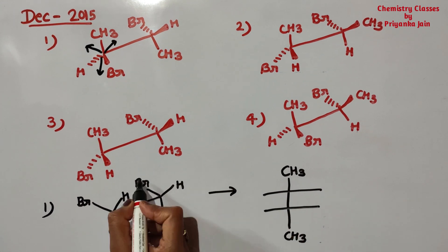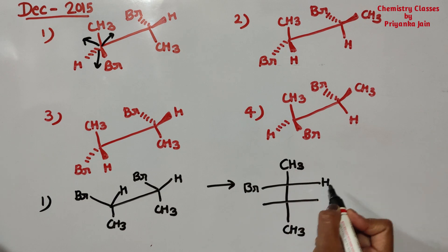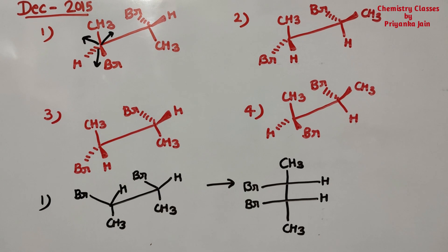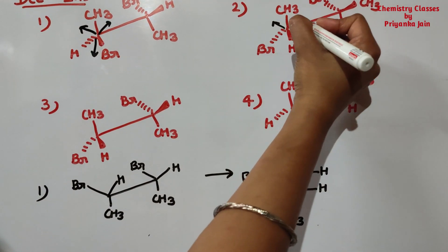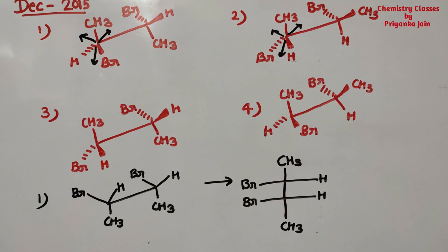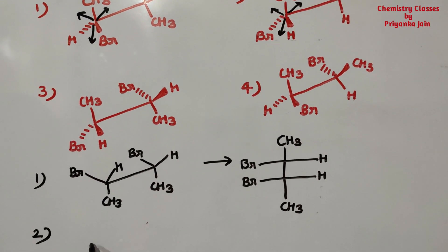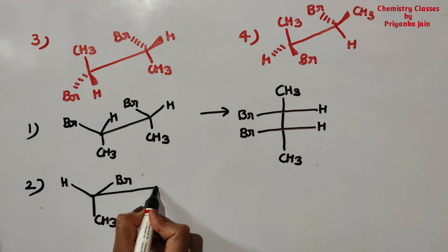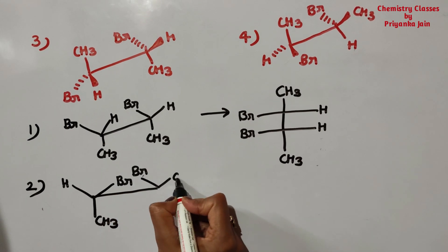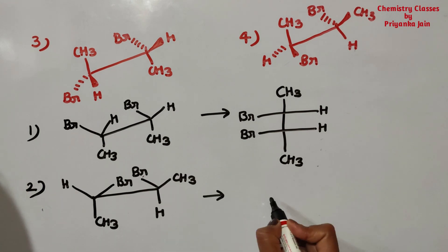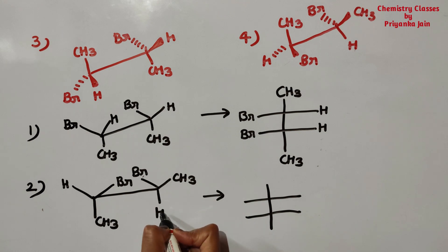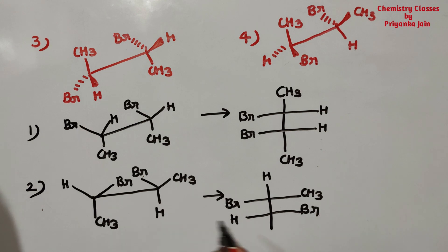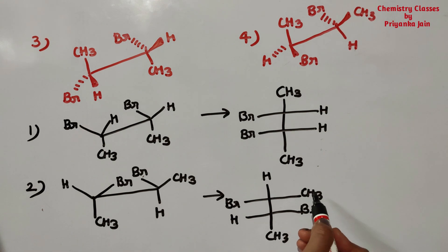That gives us its Fischer projection. For the second molecule, doing the same: hydrogen will come here, bromine will come here, CH₃ will go here, and the rest remains as it is. Converting to the Fischer projection: hydrogen is here, bromine is here, CH₃ here, and on the other carbon hydrogen, bromine, and CH₃.